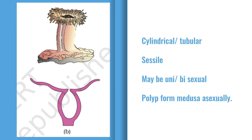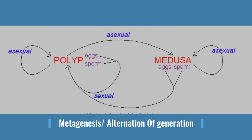Some Cnidarians have both polyp and medusa forms present. In these organisms, polyp produces medusa asexually, and then medusa converts back through a process. This is called metagenesis, and it is also called alternation of generation.